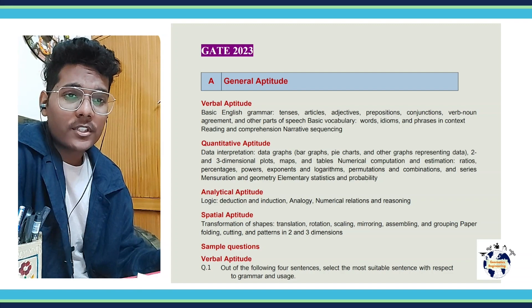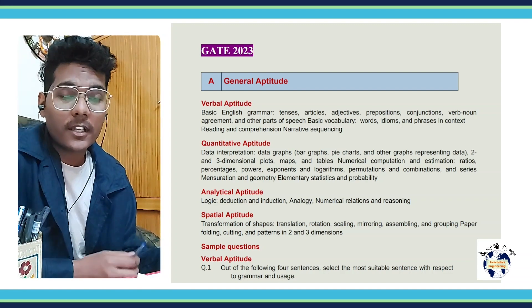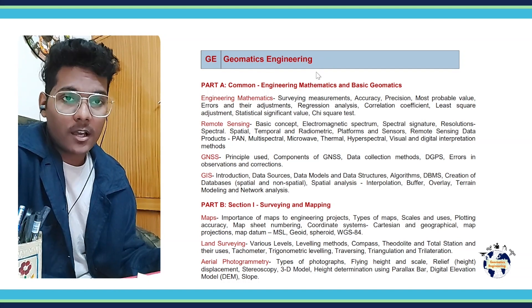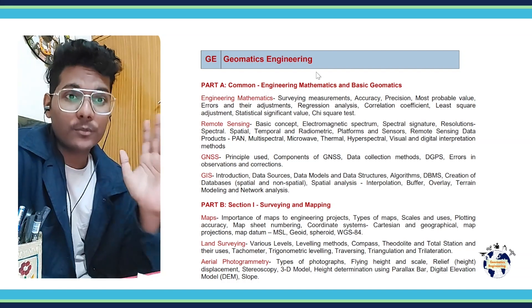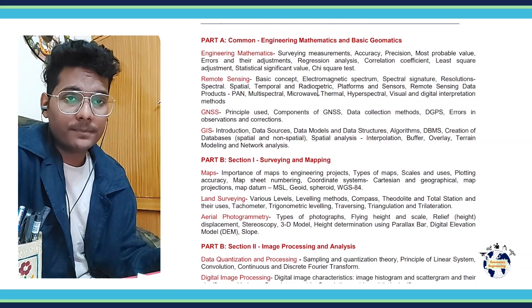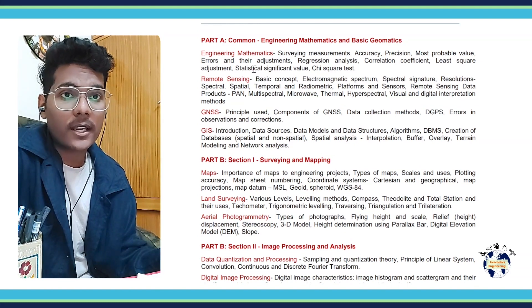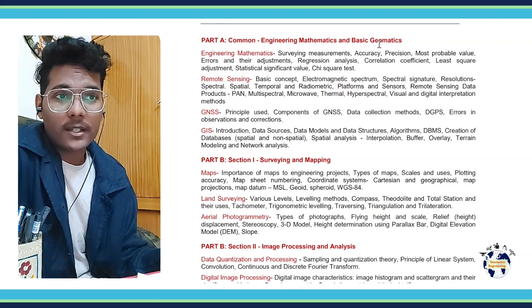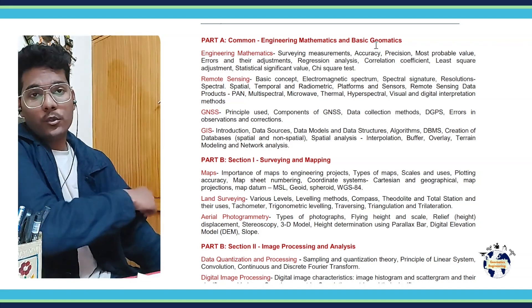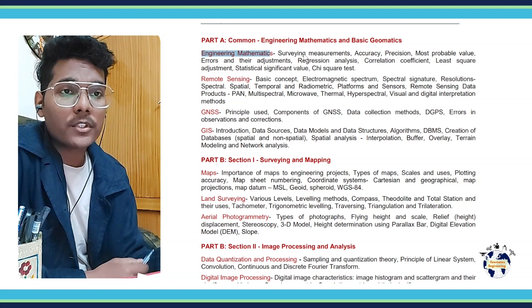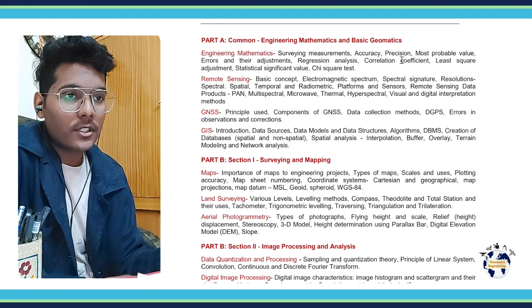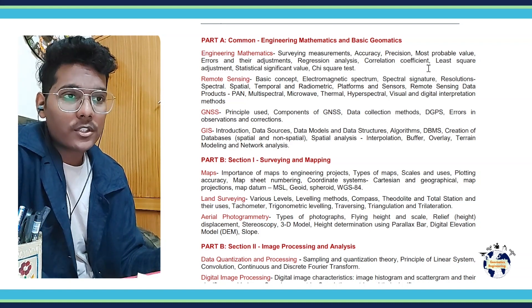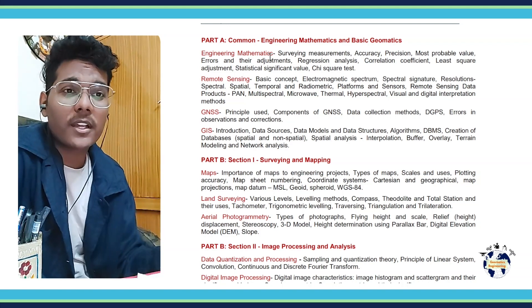After general aptitude, the main syllabus of geomatics engineering is covered here. The GATE Geomatics Engineering exam is divided into two sections: Part A and Part B. Part A is common and necessary for all candidates to attempt. It covers engineering mathematics and the basic concepts under geomatics, including surveying measurements — accuracy, precision, most probable value, errors and their adjustments, regression analysis, correlation coefficient, least square adjustment, statistical significance, and chi-square test.